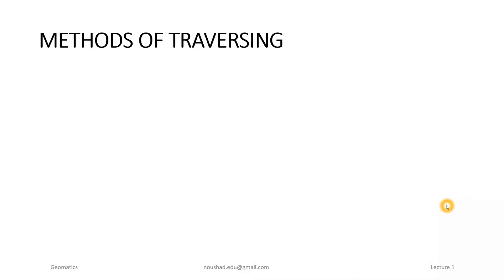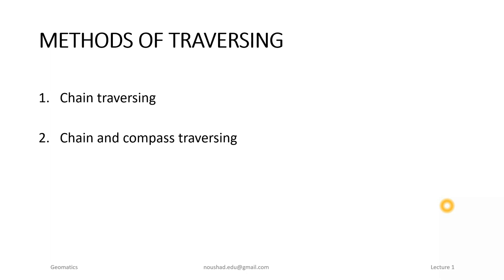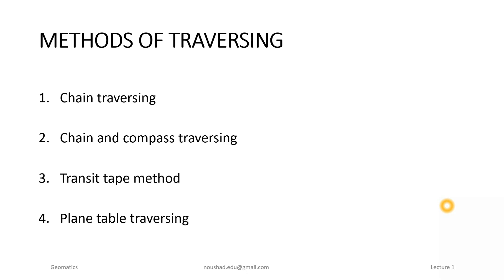Now we have to discuss the methods of traversing. Traversing can use different types of methods involving distance and angle. We have four types of traversing methods: the first one is Chain Traversing, the second one is Chain and Compass Traversing, the third one is Transit Tape Method, and the fourth one is Plane Table Traversing.